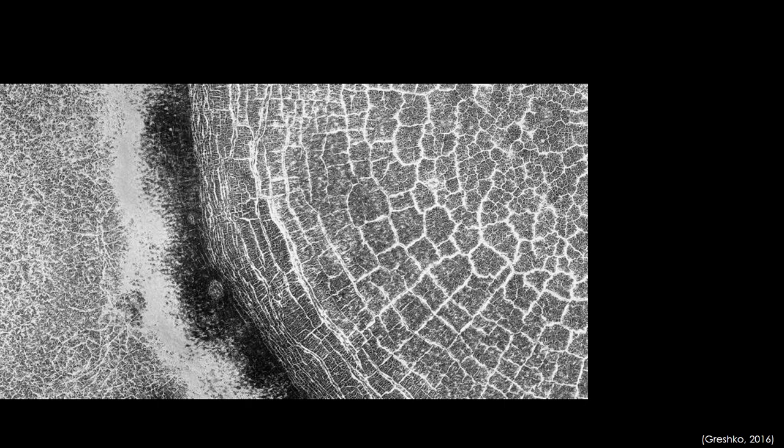The cracks in the Vastitas borealis crater on Mars were formed by sediment repeatedly freezing and thawing. Notice how the large crackling pattern repeats though the scale gets smaller toward the center, which is in the upper right corner of this image.